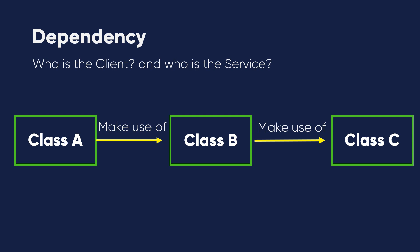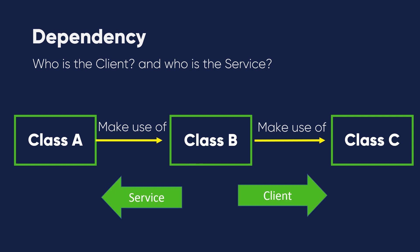So class B may play two roles. Relatively, for class A it works as a service, and class B works as a client for class C. We'll learn these concepts throughout the course, so don't worry if you didn't understand them yet. Class A depends on class B — this is dependency.